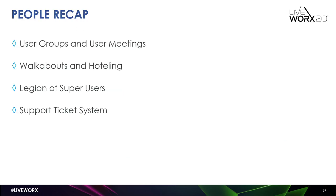To recap, some of the things in the people portion of your implementation include user groups and user meetings, walkabouts and hoteling to interact with your end users on a regular basis, a legion of super users, and a support ticket system.